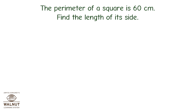Read the problem statement carefully. The perimeter of a square is 60 centimeters. Find the length of its side. We have been given a perimeter of a square and we have to find the length of its side.